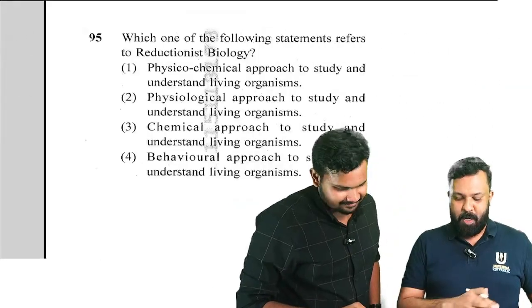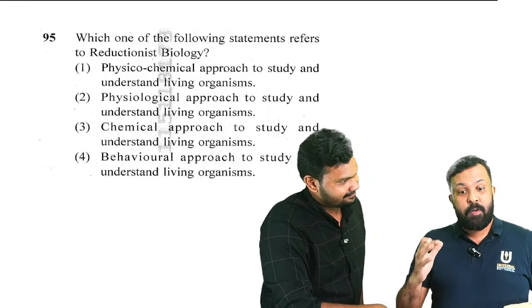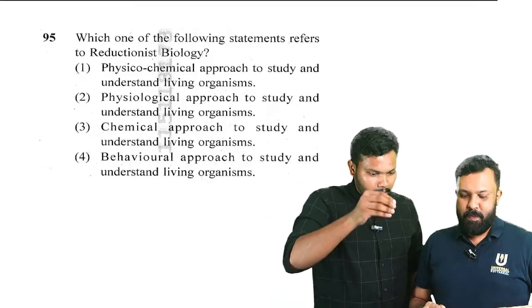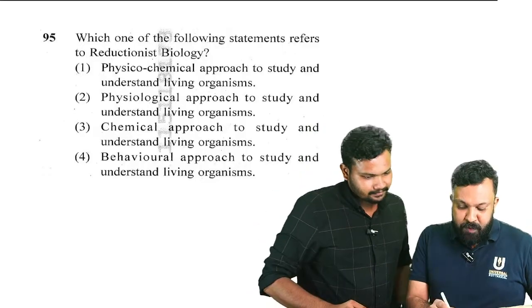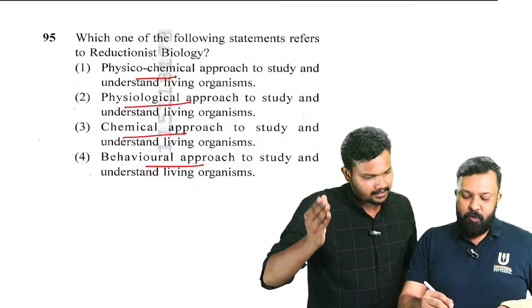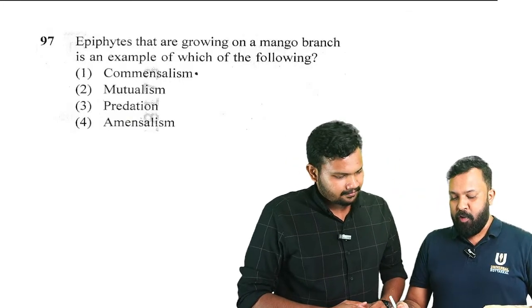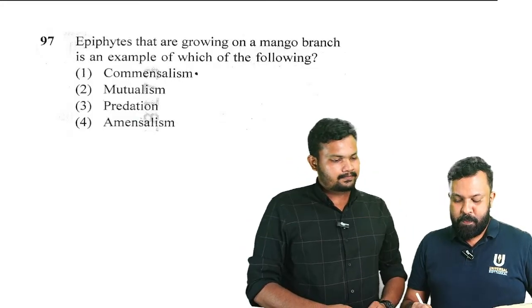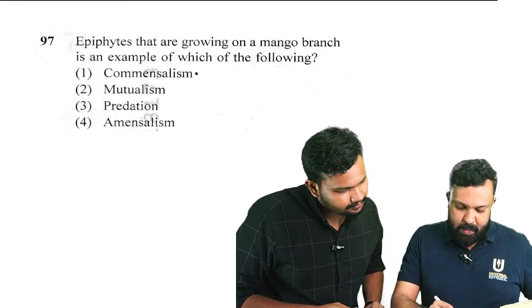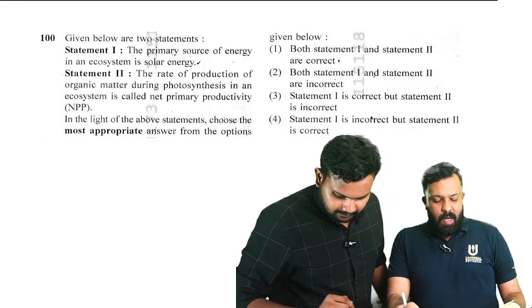After 30 cycles, approximately one billion copies are produced. Question number 95: which one of the following statements refers to reductionist biology? The physico-chemical approach is the right answer — option one. Question number 97: epiphytes growing on a mango branch is an example of which of the following? Options: commensalism, mutualism, predation, amensalism. Commensalism — plus/zero interaction — commensalism is the right answer.